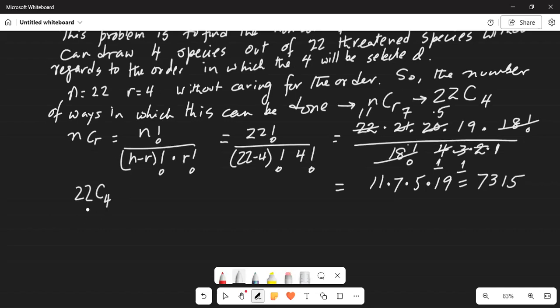Okay, so let's do it another way which is much easier. So we know we have to find out 22 C 4. So first we will type 22 in our calculator then press the math button